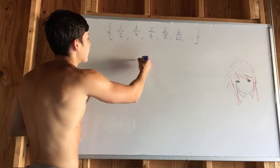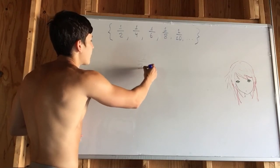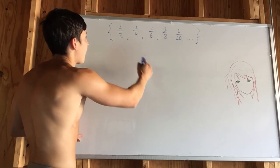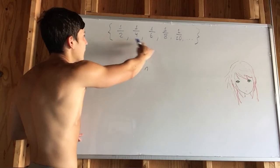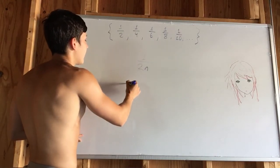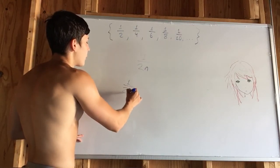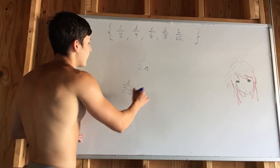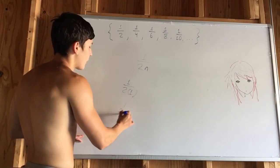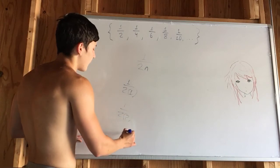So in this case, this is 1 over 2 times n, because you're multiplying by 2 each time. It's 1 over 2 times 1, then it's 1 over 2 times 2, and so on.